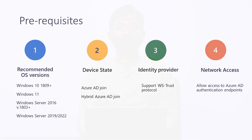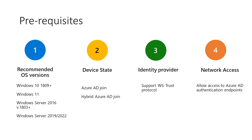First, let's take a look at the prerequisites you need to evaluate. Since we're talking Windows, you need to have Windows 10 version 1809 and above or Windows 11 for desktops. There's no difference between Windows 10 and Windows 11 in terms of device join and sign-in scenarios. If you have a Windows Server, we recommend Windows Server 2016 with the 1803 update or the latest versions of Windows Server 2019 and 2022.